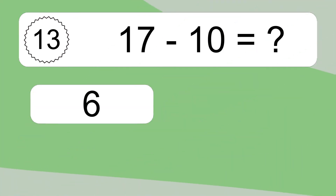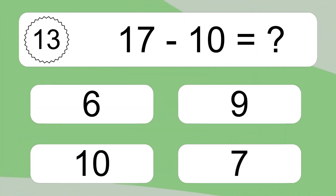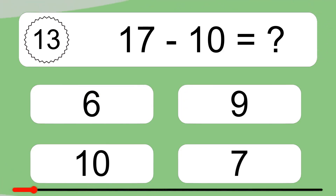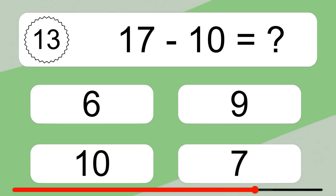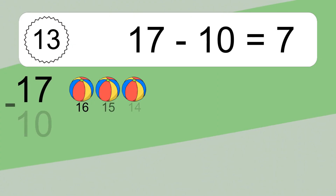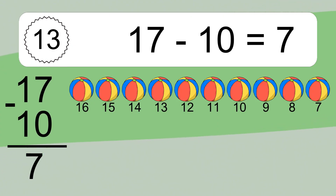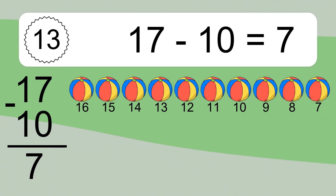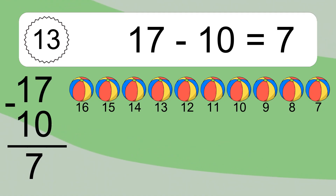17 minus 10 equals what? 17 minus 10 equals 7. Let's count it: 16, 15, 14, 13, 12, 11, 10, 9, 8, 7.